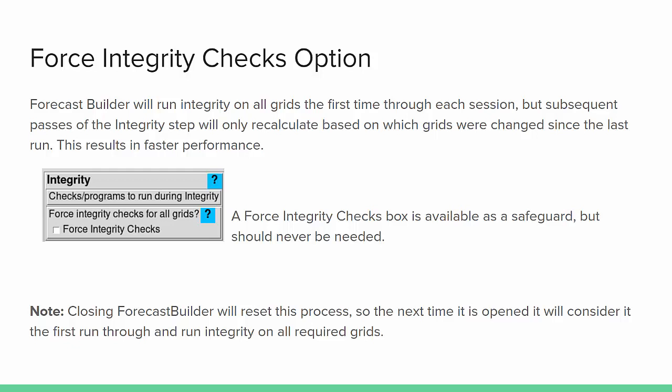In subsequent passes of the integrity step, it will only recalculate the grids based on which grids were changed since the last run. This results in faster performance and time savings for the forecaster. Note that closing out Forecast Builder resets this process, so the next time you open it, it will be considered the first run and will run integrity on all the required grids.